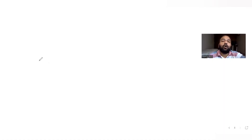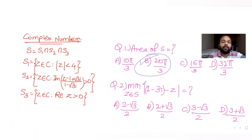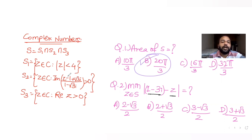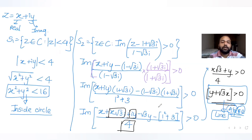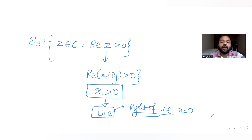Hi guys, I hope you are all doing well. Today we are going to see the second part of the same question which we discussed yesterday. We were asked to find the minimum distance of the complex number from a point. We have been given that S is a common region which is common to all three: S1, S2, and S3. If you haven't seen yesterday's video, please go check that out first, where I explained how we get the regions S1, S2, and S3.